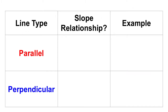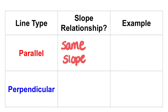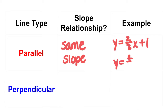So in summary, you can determine that two lines are parallel because they have the same slope. For example, if you have y equals 2 thirds x plus 1 and y equals 2 thirds x minus 5, these two lines would be parallel because their slopes of 2 thirds are the exact same.